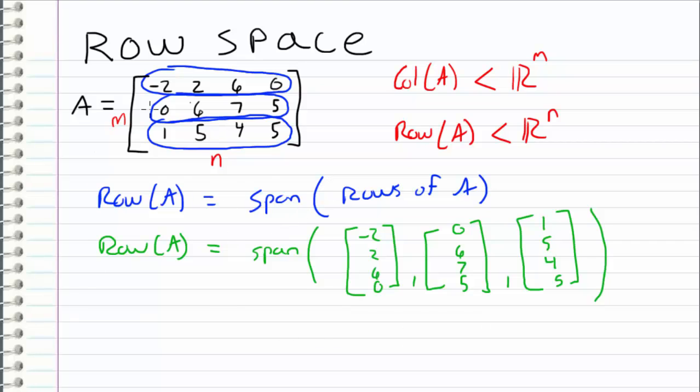Another thing that I want to point out is that as we perform row operations on our matrices, the row space is preserved, meaning that if we have a matrix A which is row equivalent to matrix B, then this means that the row space of A is equal to the row space of B.